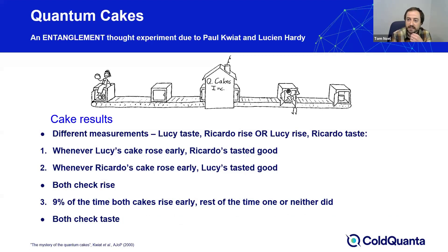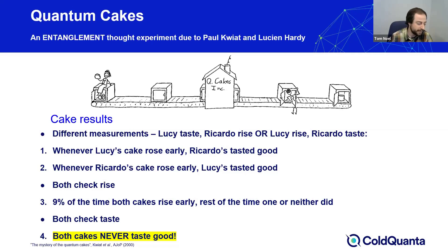Then both check taste — drum roll please — and they find that never do both of the cakes taste good. How can this possibly be? In the 9% of cases where both cakes rose early, surely if one cake had not been checked for rising, according to observations one and two the cake must have tasted good. The logic is so simple as to be transparent, flawless. So where did we go wrong?